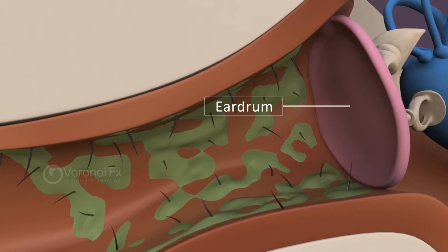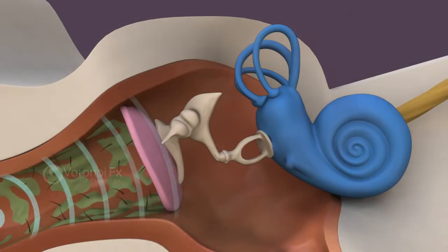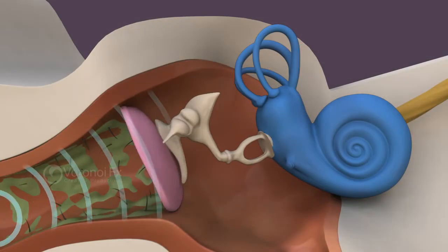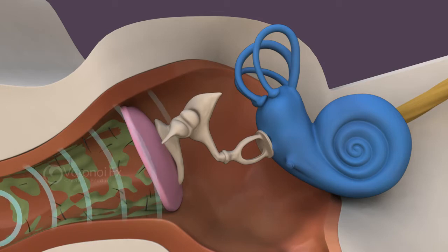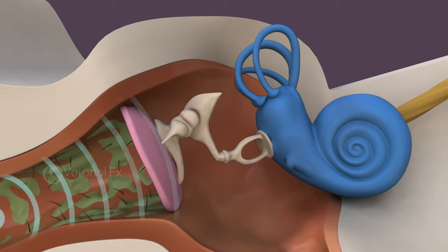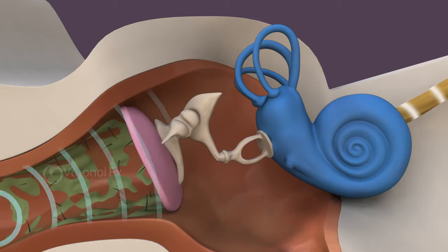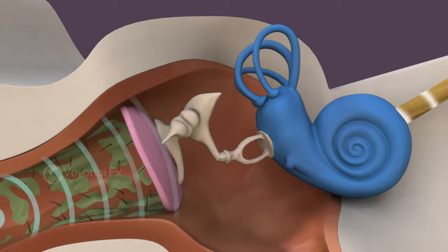The eardrum is a thin piece of skin positioned between the ear canal and middle ear. It vibrates in response to sound waves, which are then transmitted to the ossicles of the middle ear.